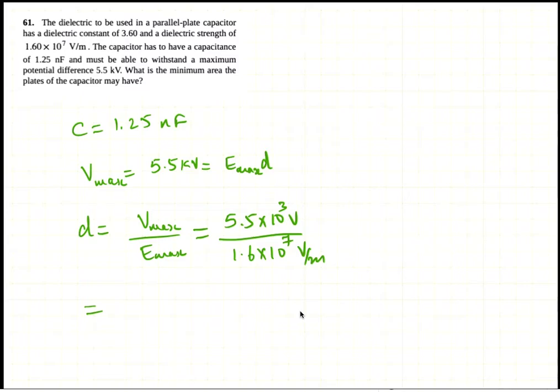So D is 0.344 times 10 to the minus 3 meters. So 0.344 millimeters. So that's the plate separation.